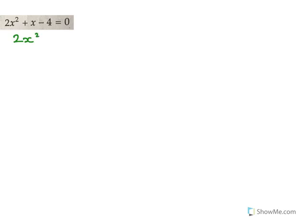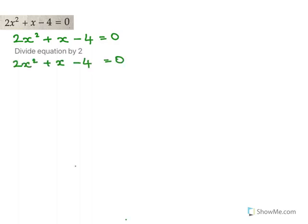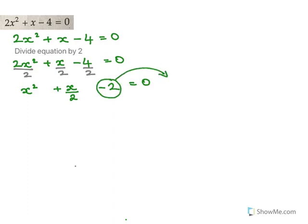Now for the next one, we go a little faster. We have 2x² + x - 4 = 0. Since x² has a coefficient of 2, we divide the equation by 2, giving x² + x/2 - 2 = 0. The non-x term, -2, is transposed to the other side, giving x² + x/2 = 2.